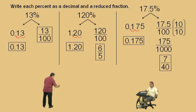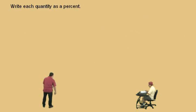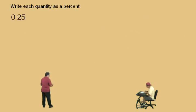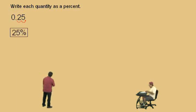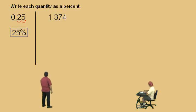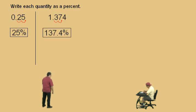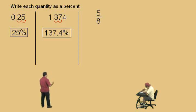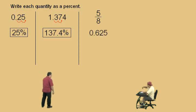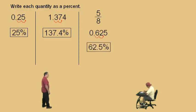Alright, let's move on. Now write each quantity as a percent. Don't get scared. Here's 0.25 — it's a decimal. How do we change a decimal to a percent, Charlie? Move it right two times. That's right, move it to the right two times because you're multiplying by 100, and we get 25%. Here's another decimal, Charlie: 1.374. What do we do? Move it to the right two times. That's right, and we end up with 137.4%. And take out your calculator — you get 0.625, and now we move the decimal to the right two times. That's 62.5%.